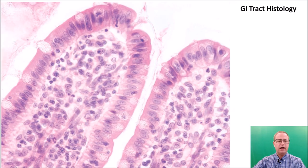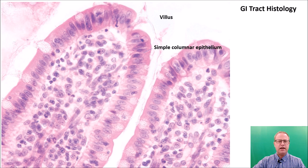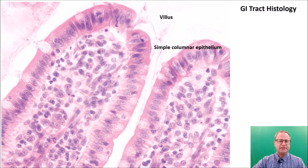Here is a 400x view of the same histology of the small intestine. You can see the villus — a big finger-like structure — made up of simple columnar epithelium. Most of the time we're going to have simple epithelium in the stomach, small intestine, and large intestine. The exceptions are stratified squamous epithelium in the esophagus and the lower part of the rectum and anus, because we have friction occurring there.